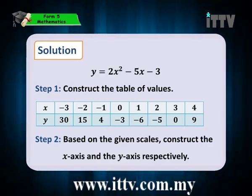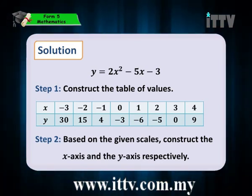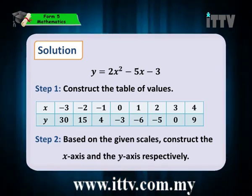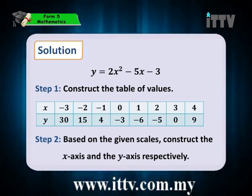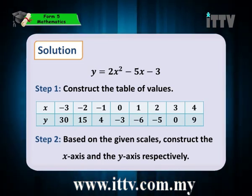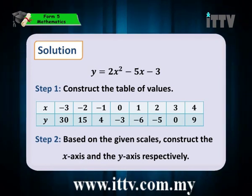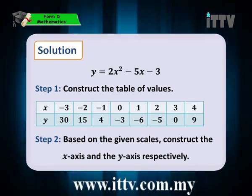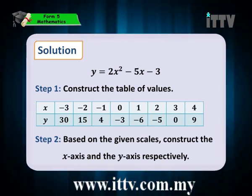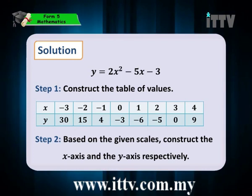The table is for the set of x values. If x ranges from negative 3 to 4, we have to calculate the corresponding value of y for each value of x. For example, if x is negative 3, by inserting negative 3 and calculating, we get y equals 30. Negative 2 for x gives a y value of 15, and so on.